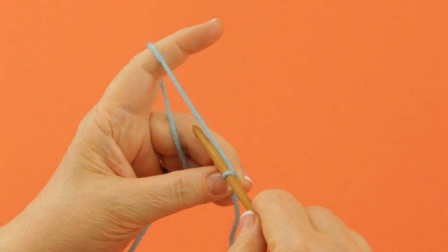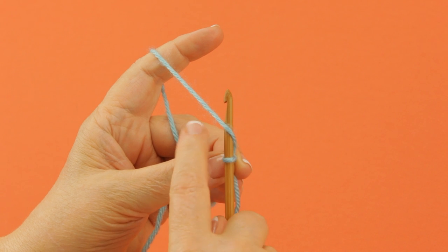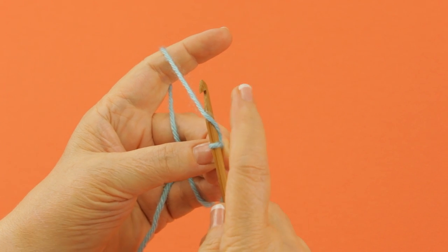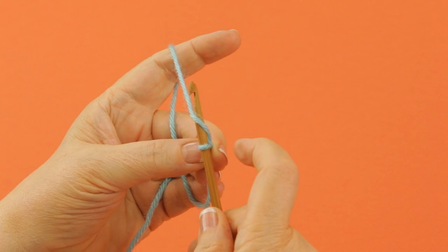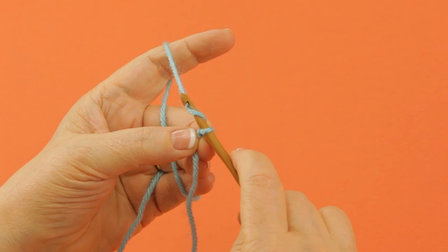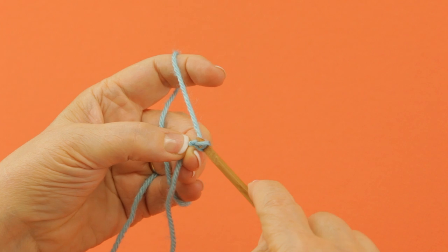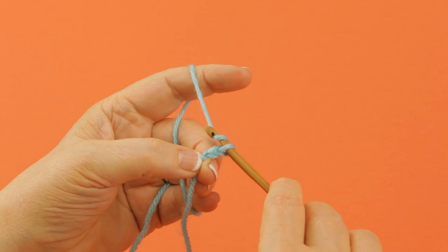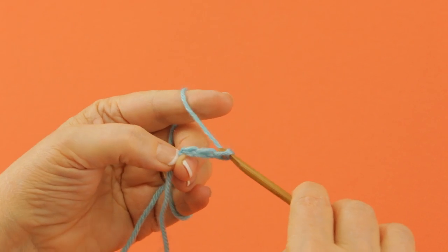Now to make the chain, you're going to yarn over by bringing the yarn over the top to the front so that this nook can catch the yarn and pull it through the loop. You've made a chain, and I'm going to continue to chain along here while you watch.